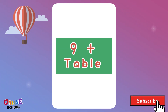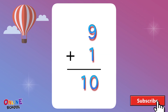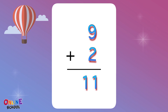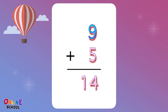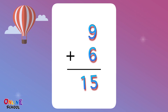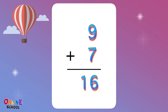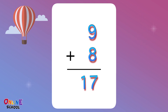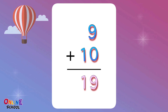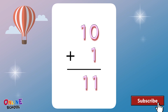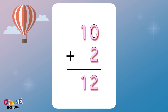Table 9: 9 plus 1 equals 10, 9 plus 2 equals 11, 9 plus 3 equals 12, 9 plus 4 equals 13, 9 plus 5 equals 14, 9 plus 6 equals 15, 9 plus 7 equals 16, 9 plus 8 equals 17, 9 plus 9 equals 18, 9 plus 10 equals 19.